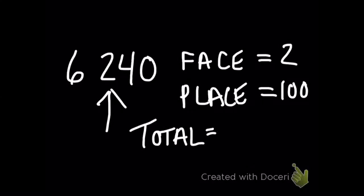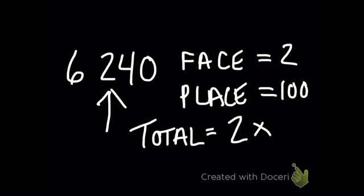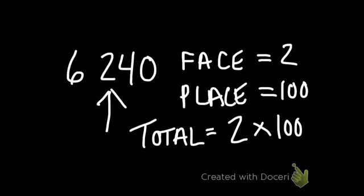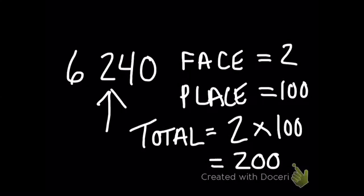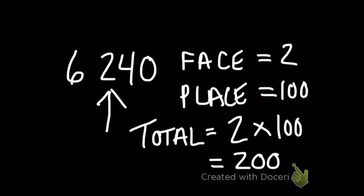Finally, to find the total value, you need to multiply the face value times the place value. And in our case, that will give us 200. So the total value of the indicated digit in this number is 200.